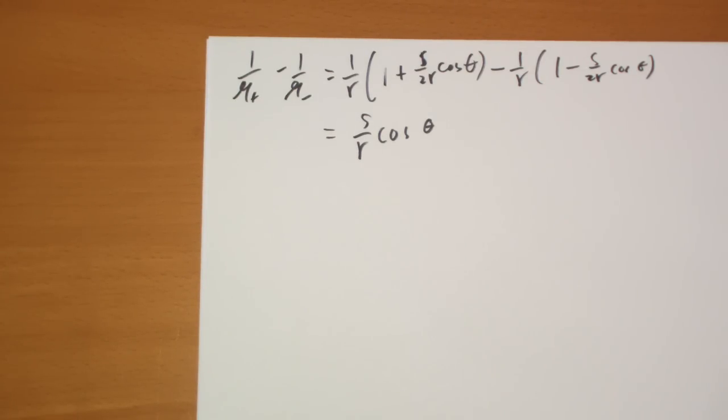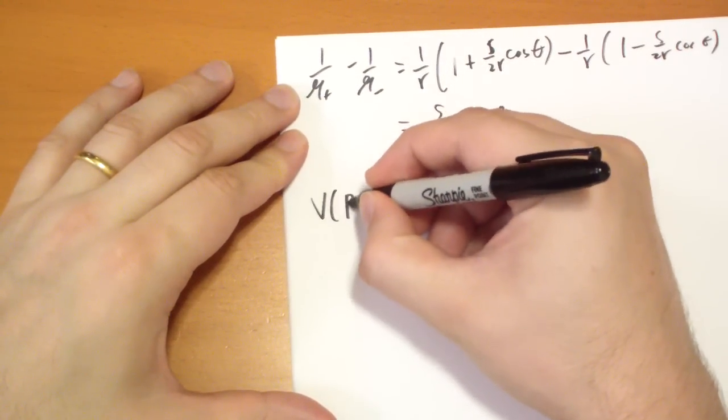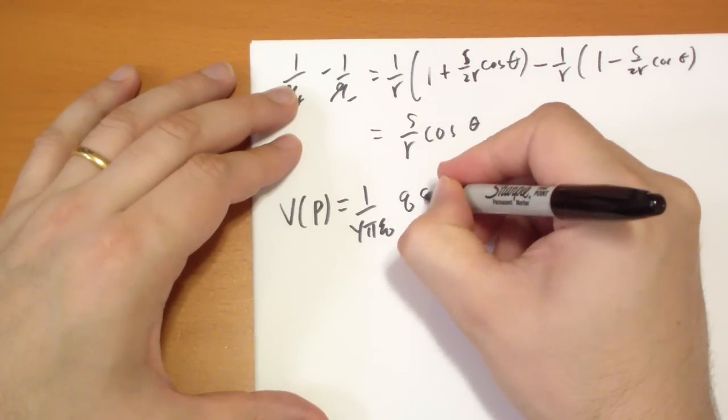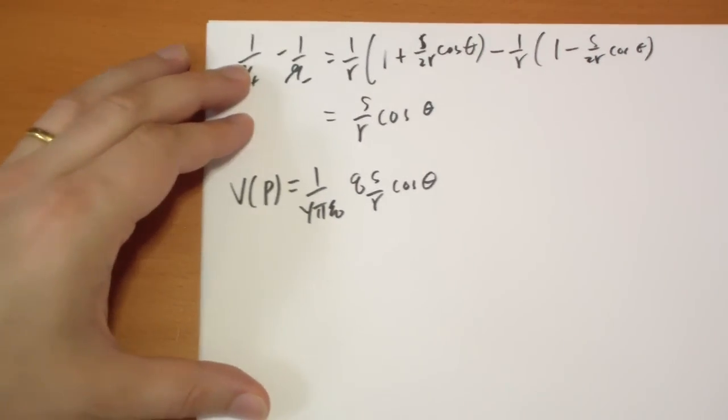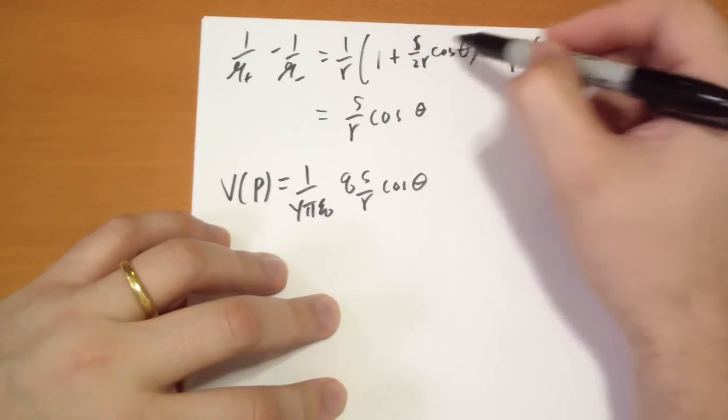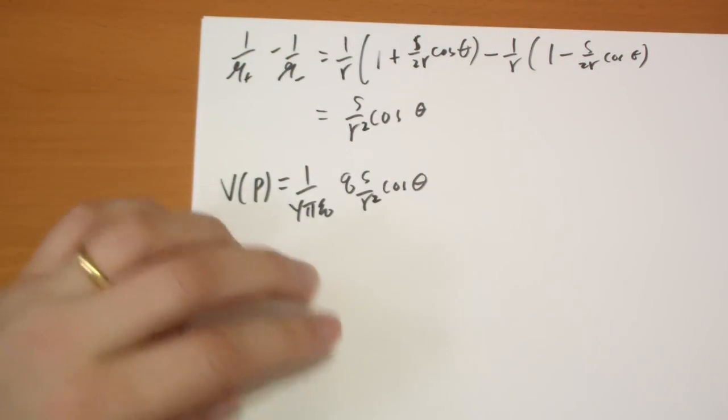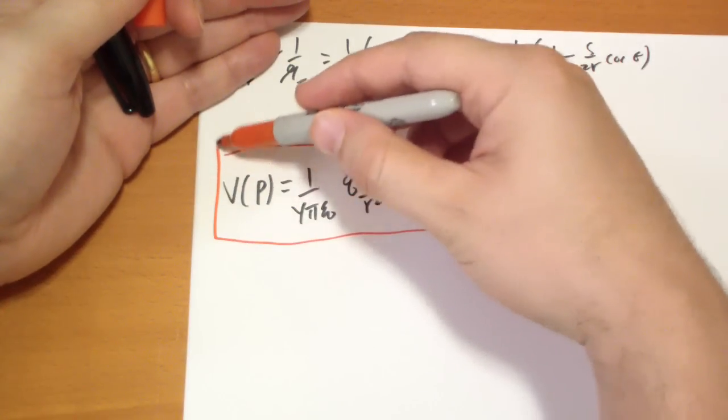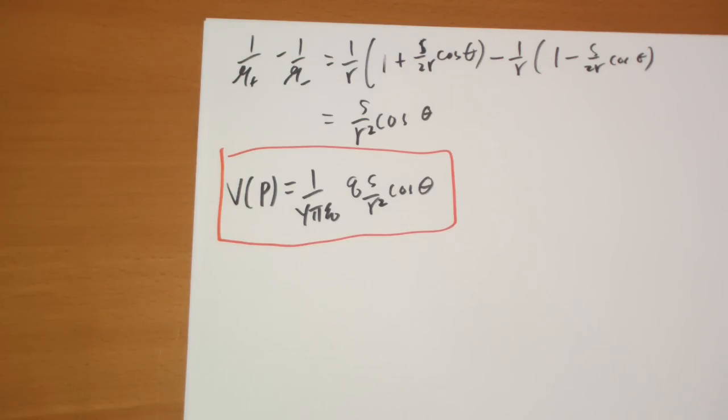We plug that into the original formula that we had for the potential, and we get the potential at point P is equal to 1 over 4 pi epsilon naught times Q times S over R cos theta. S over R, I'm missing an R. Where'd my R go? So, oh, ha, this 1 over R has to distribute as well, so it's 1 over R squared. There we go. So here we go, QS over R squared cos theta. This is the potential that we get for approximating some things, which, you know, if you look at the approximations we took, you can probably convince yourself that they were wise. But we call this the potential of a dipole.